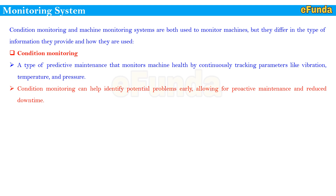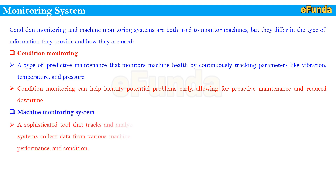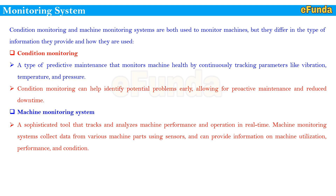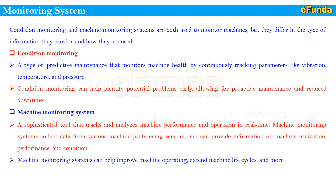Similarly, a machine monitoring system is a sophisticated tool that tracks and analyzes machine performance and operation in real time. It collects data from various machine parts using sensors and can provide information on machine utilization, performance, and condition. MMS can help improve machine operation, extend machine life cycle, and much more. Condition monitoring is often used for moving components like gears and bearings, as well as boilers and heat exchangers, whereas machine monitoring is used for monitoring overall machine performance.